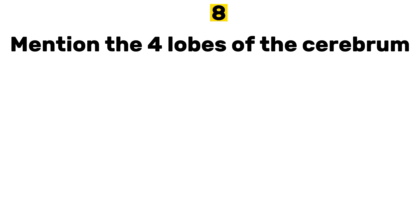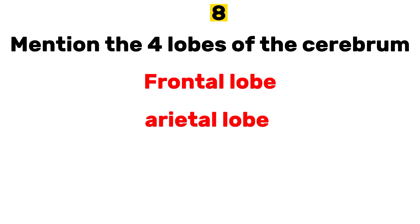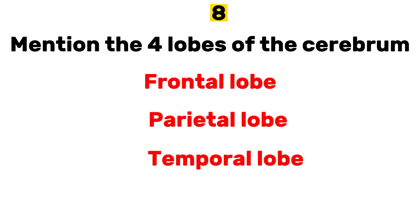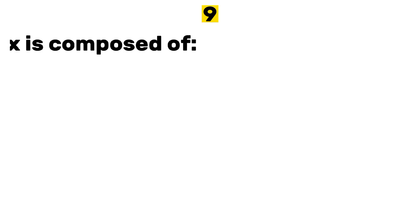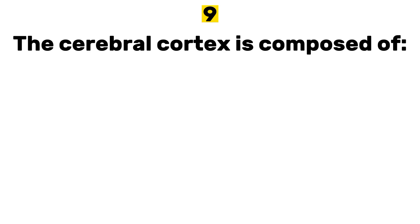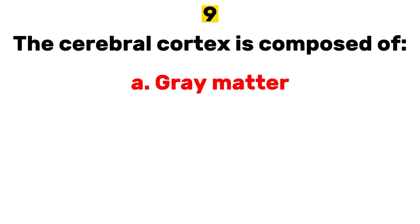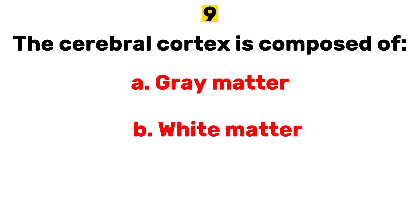Answer: frontal lobe, parietal lobe, temporal lobe, and occipital lobe. Number nine: the cerebral cortex is composed of — a) gray matter, b) white matter, c) tracts.